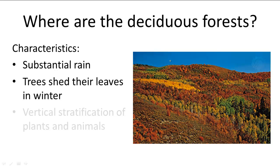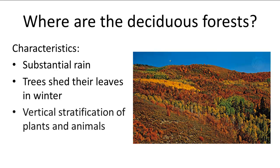Part of this diversity is due to the unique vertical stratification of plants and animals in the deciduous forest. From top to bottom, you have the canopy overhead, then one or two layers of understory trees, a shrub layer, and an herbaceous layer of small plants and vegetables. This plant stratification allows different species of animals to live in different places.